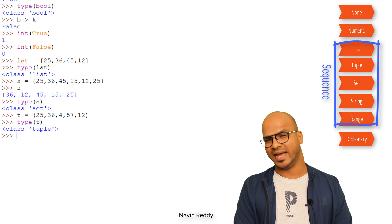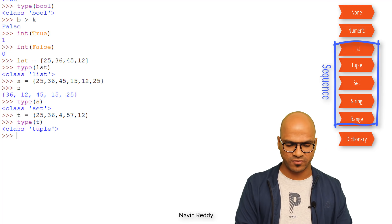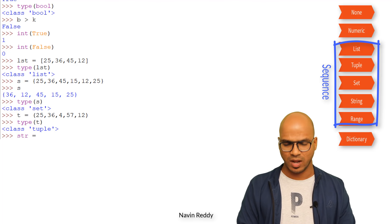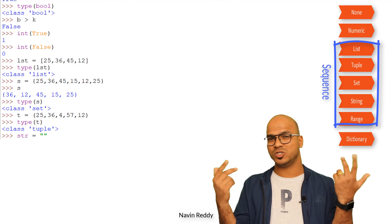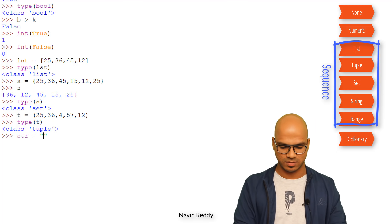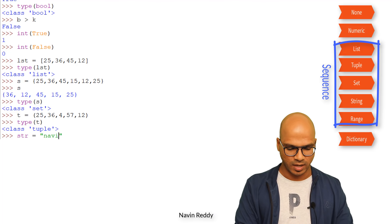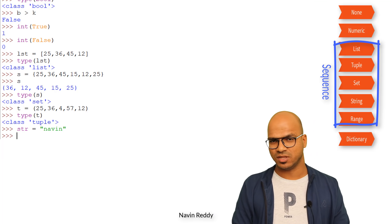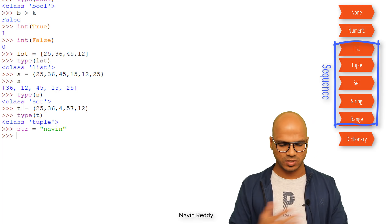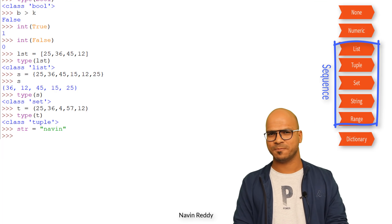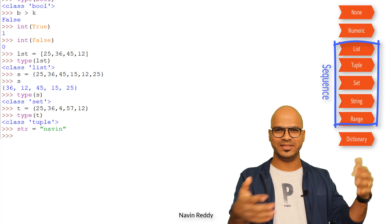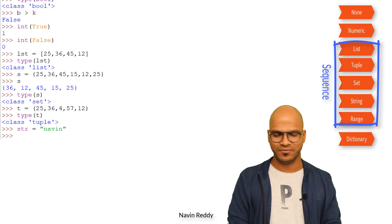We also have a string type. To define a string: str equal to a name using double or single quotes — both work. I'll say 'Naveen'. Using str you can perform certain operations. We have done that in detail in earlier videos.